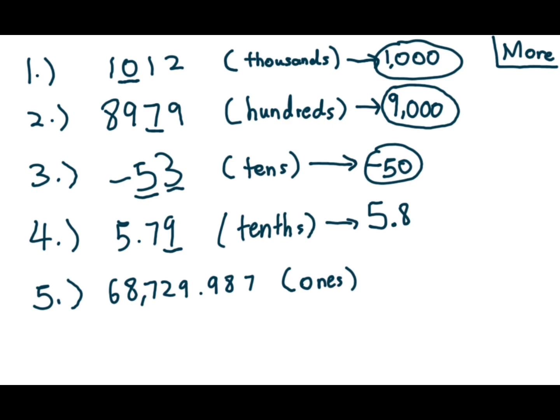And final example, 68,729.987. This is a very long example, but if we break it down, the only part that it wants is actually just this part because it is the ones place.